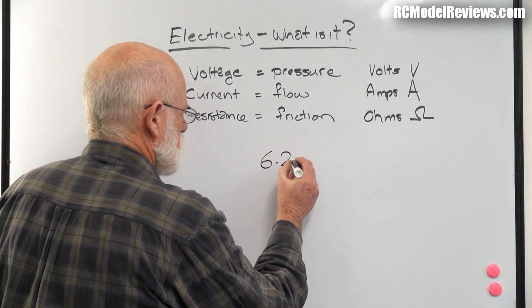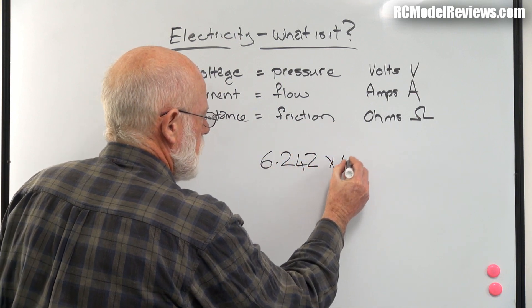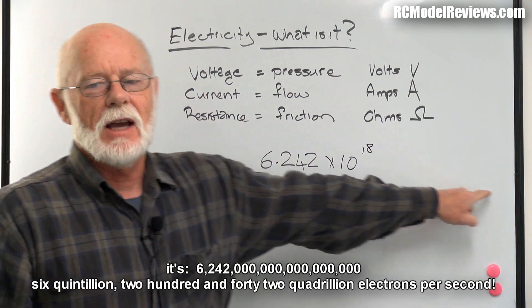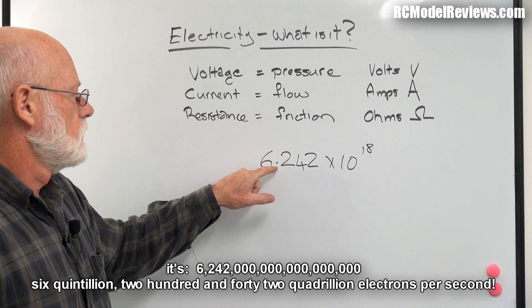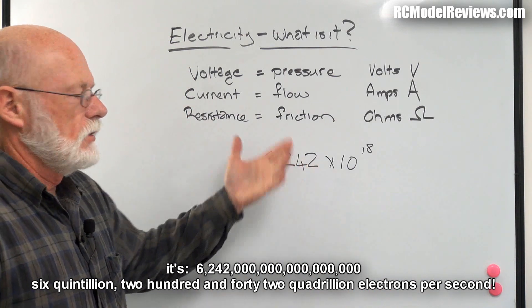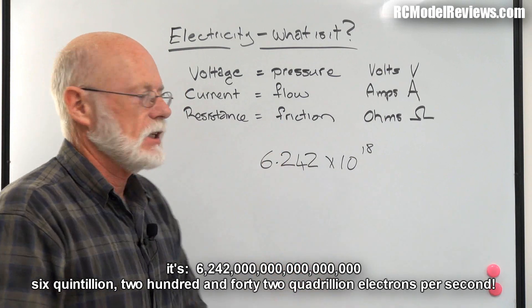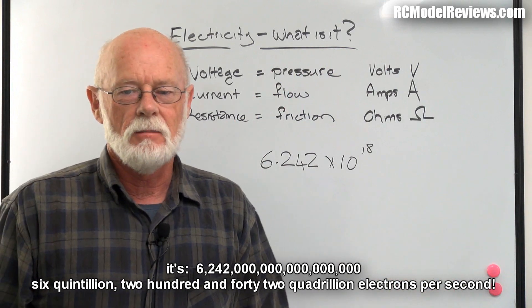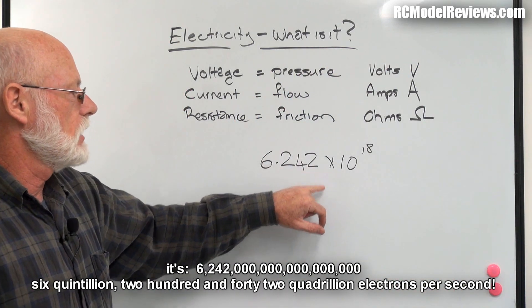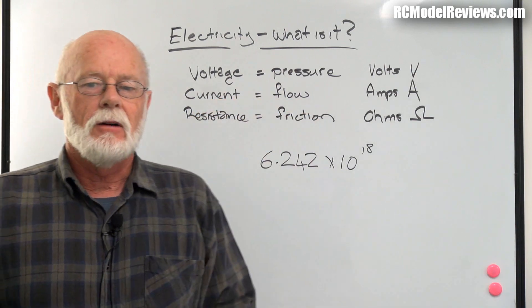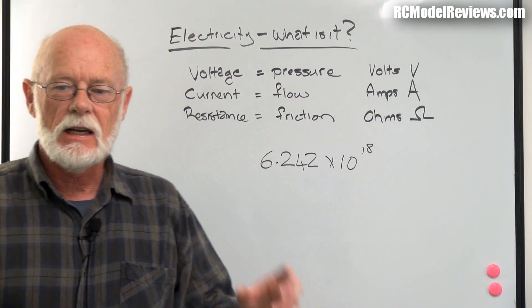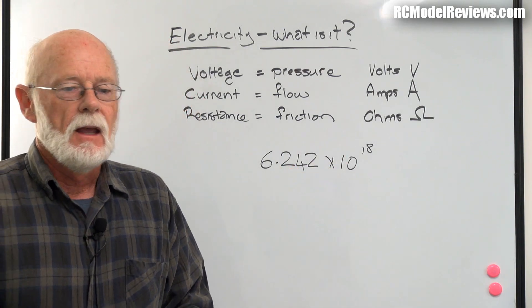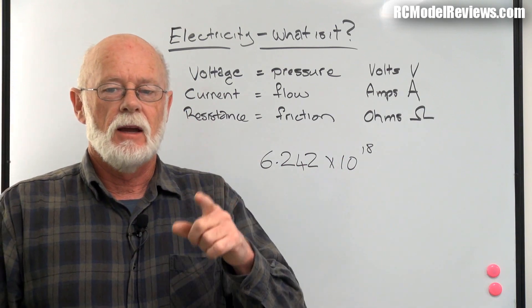I'll write that down - 6.2 times 10 to the power of 18. That's 6.242 with 18 zeros after it, a hugely, massively, fantastically large number. That's the number of electrons that have to flow past a particular point before we have an amp of current flow. It's a huge number because electrons are really small, they're tiny - one of the basic components of matter. By the way, never trust atoms, they make up everything.